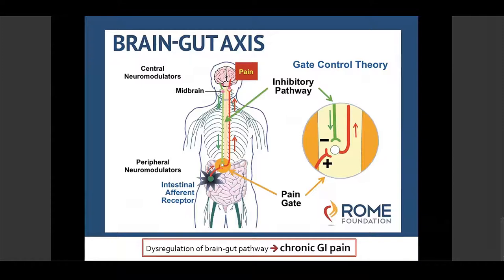This leads us to another important theory: the gate control mechanism for GI pain. The pain that begins in the gut ascends to the dorsal horn of the spinal cord and goes up through second-order neurons into the midbrain and the limbic structures in the brain. The limbic structures are involved in the emotions that we put into that sensation.